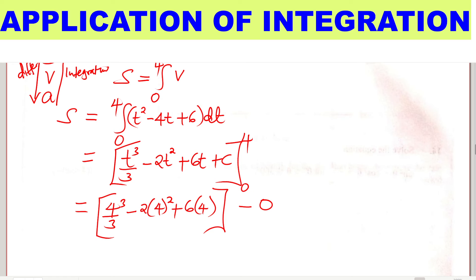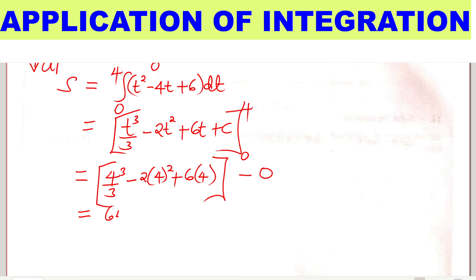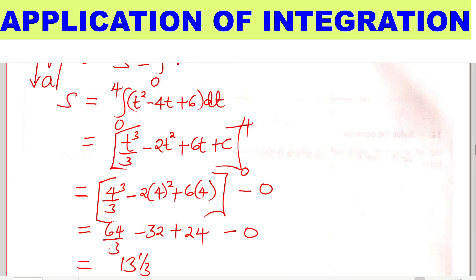So now we need to work out these. So 4 cubed divided by 3 will give 64 divided by 3. Then subtract 2 times 4 squared. 4 squared is 16, this will be 32. Then plus 6 times 4, you get 24. Then you subtract 0. So working out 64 divided by 3 minus 32 plus 24, use the calculator to work out these. So this will give 13 and a third.